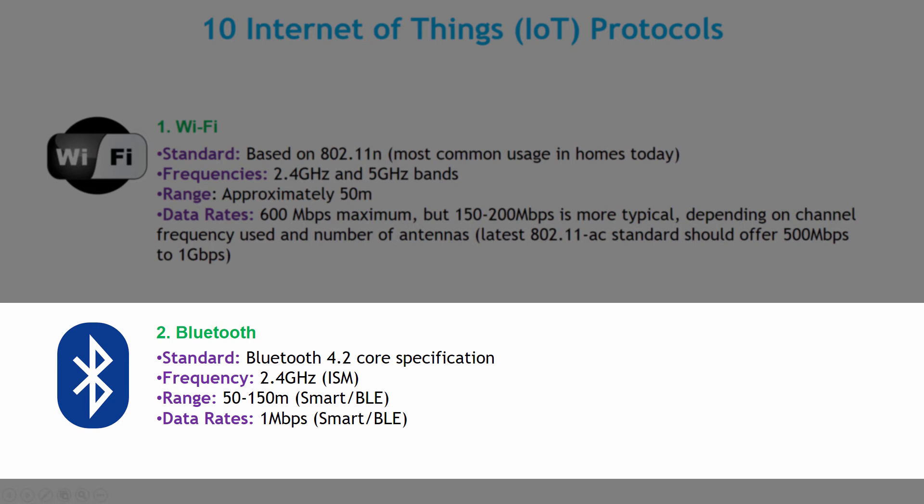According to the Bluetooth SIG (Special Interest Group), more than 90% of Bluetooth-enabled smartphones including iOS, Android, and Windows-based models are expected to be Smart Ready by 2018. The frequency used by Bluetooth is 2.4 GHz, the range of Bluetooth devices is around 50–150 meters for Smart and BLE range, and the data rate is around 1 Mbps in Bluetooth Low Energy.